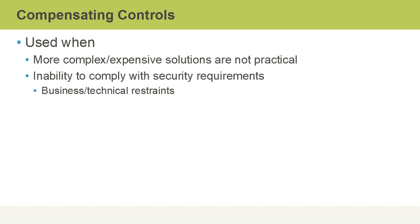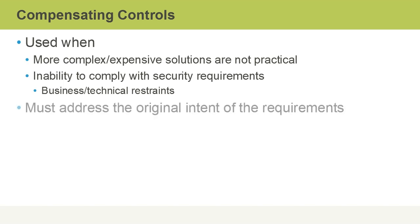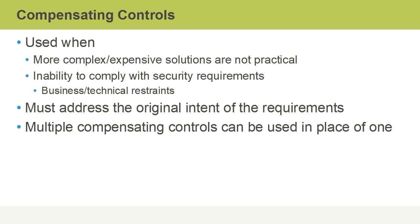We also might have an inability to comply with specific security requirements due to business or technical restraints, such as limits within our budgets or even a limit with our internal skill set. Compensating controls need to address the original intent of a security requirement. And we can even use multiple compensating controls in place of one more complex or expensive solution.